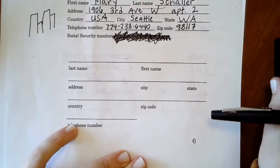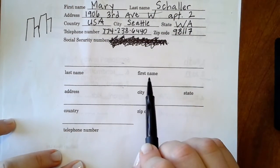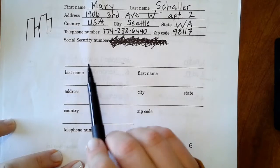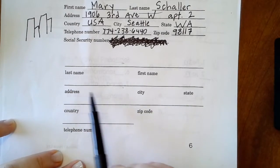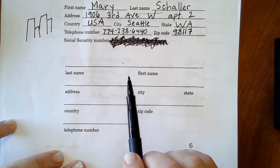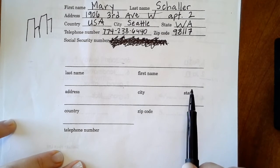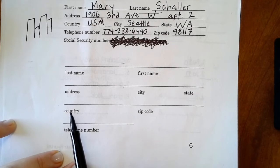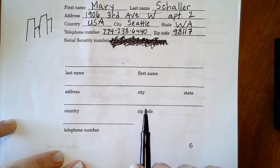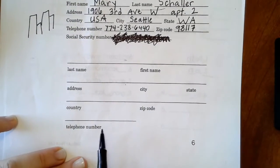And then down here, same information, just different order. First name, then last name. So for me it is Schaller, Mary. Then your address here, house number, street, and apartment. Then city Tukwila, state Washington, country USA, zip code, whatever your zip code is, and then your telephone number.